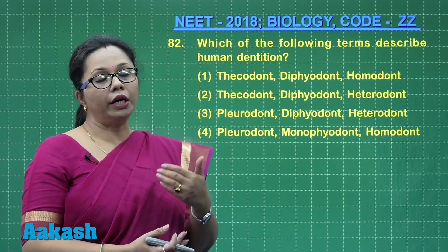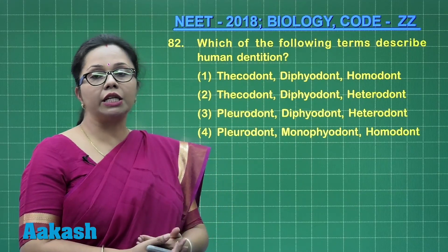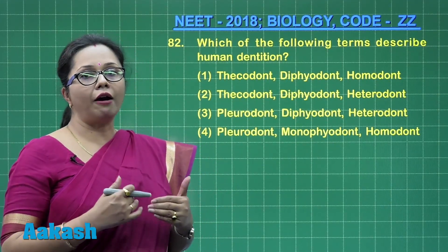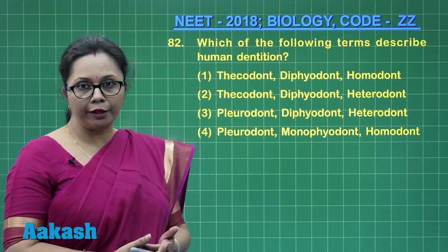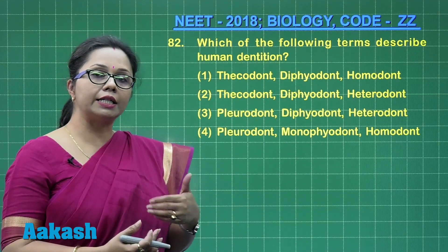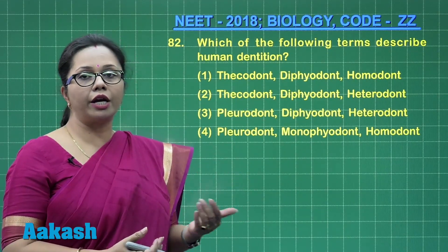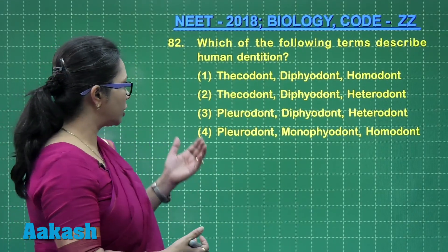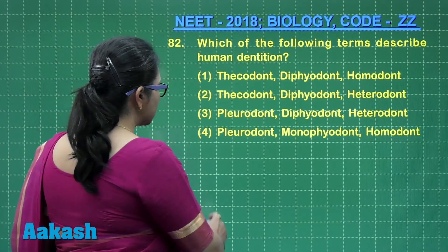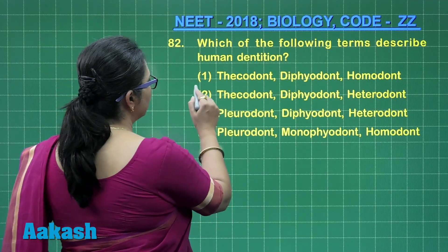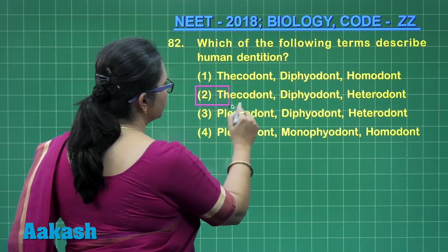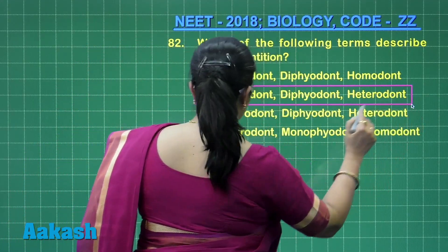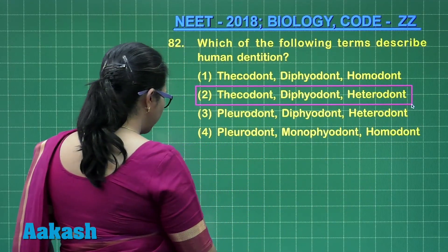and that is why these teeth are called diphyodont. We have four different types of teeth — that is incisors, canines, premolars, and molars — so that is heterodont.